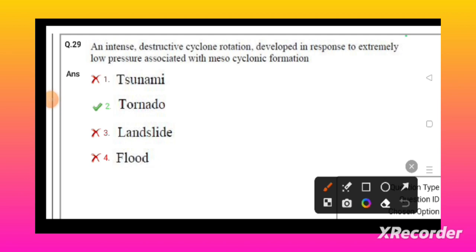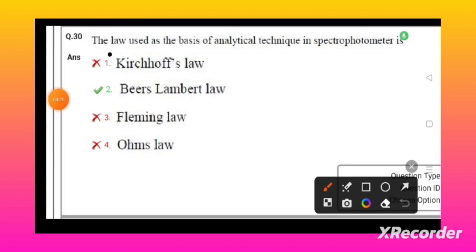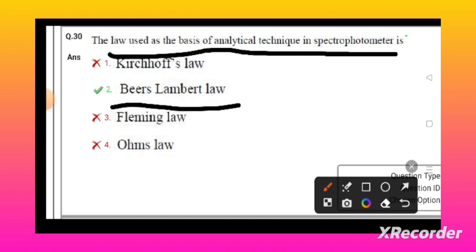An intense destructive cyclonic rotation developed in response to extremely low pressure associated with mesocyclone formation - that is tornado. The law used as basis of analytical technique in spectrophotometry is Beer-Lambert's law.